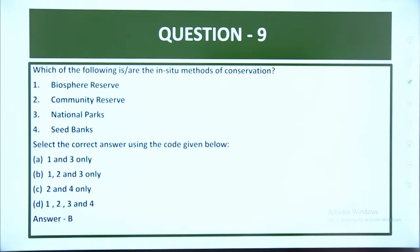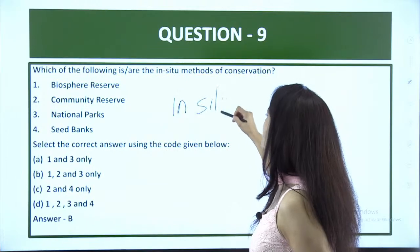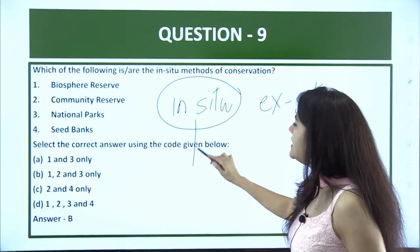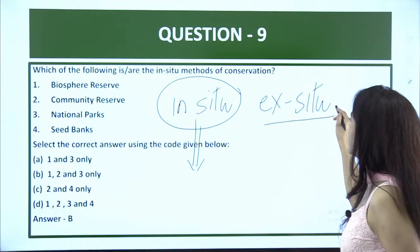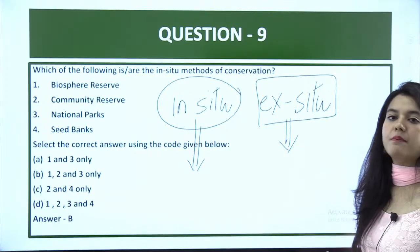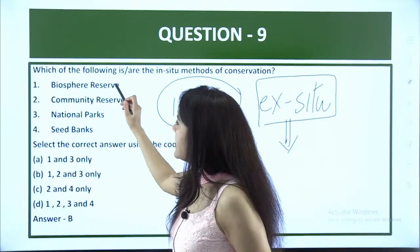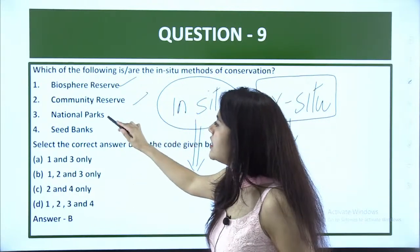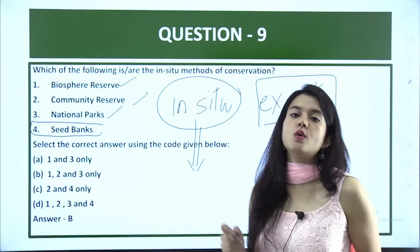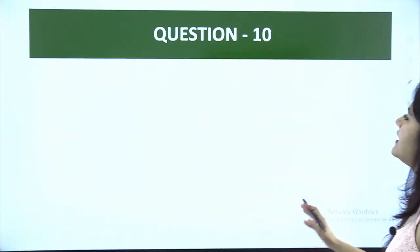Question number 9. In-situ methods of conservation. There are two kinds of conservation: in-situ and ex-situ. In-situ means protecting organisms at their original site. Ex-situ means taking them away from their site for protection. In-situ methods include Biosphere Reserve, Community Reserve, and National Park. But seed banks are ex-situ conservation, not in-situ.